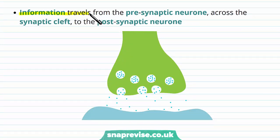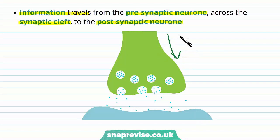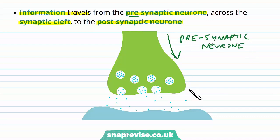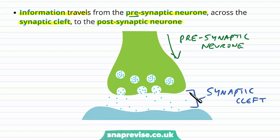The information travels from the pre-synaptic neuron across the synaptic cleft to the post-synaptic neuron. There are three elements across the synapse. First, we have the pre-synaptic neuron — the neuron before the synapse. It then has to cross the gap between the two neurons, called the synaptic cleft — 'cleft' meaning a gap between two things. Finally, we have the post-synaptic neuron, the cell after the synapse, hence 'post' before its name.